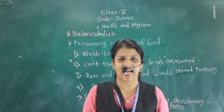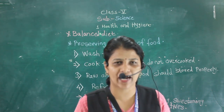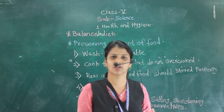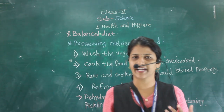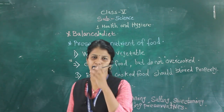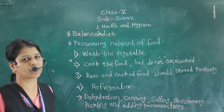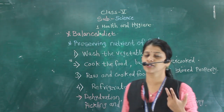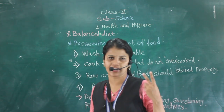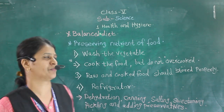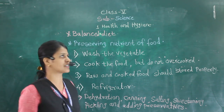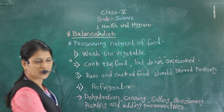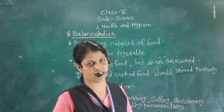Good morning students. In the last lecture we have learnt about the components of foods and different types of nutrients. There are 5 types of nutrients: carbohydrates, fats, proteins, vitamins and minerals. Related to this, we also covered fiber and water. Now, to be a healthy person, we should have a balanced diet.